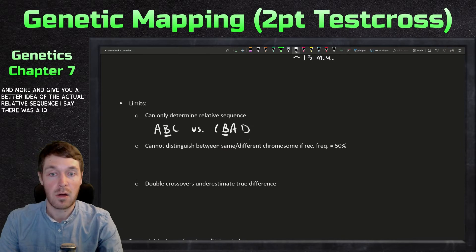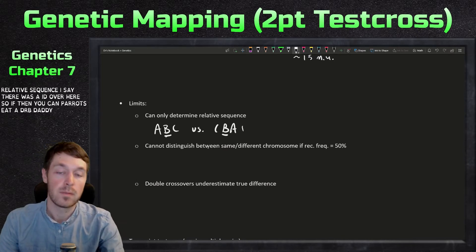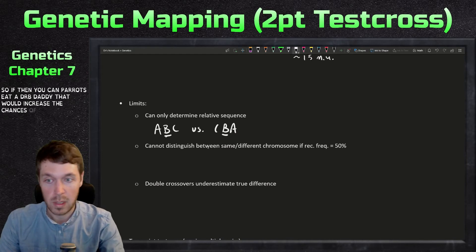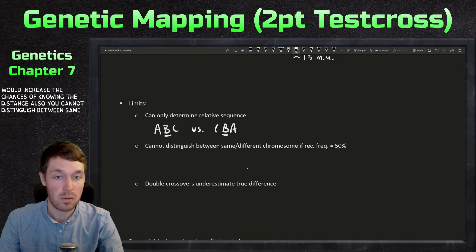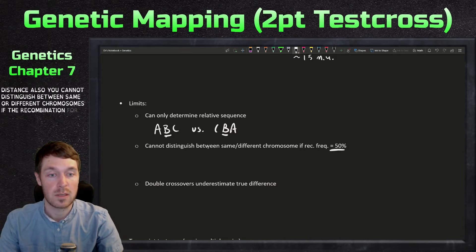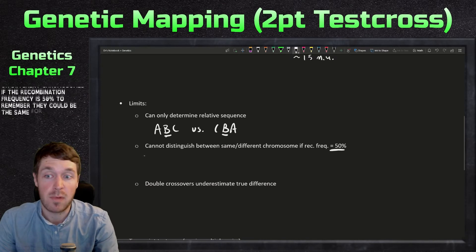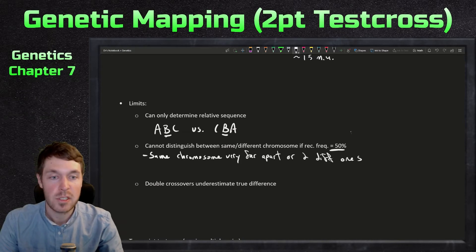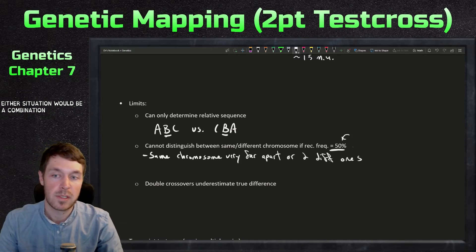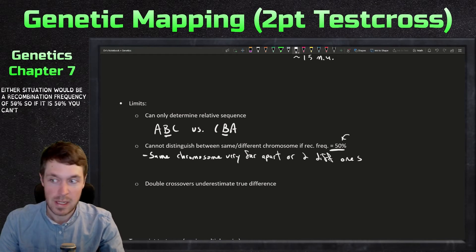Say there was a D over here. If then you compared C to D or B to D, that would increase the chances of knowing the distance. Also, you cannot distinguish between same or different chromosomes if the recombination frequency is 50%. Remember, they could be the same chromosome very far apart, or they could be two different chromosomes. Either situation would be a recombination frequency of 50%.